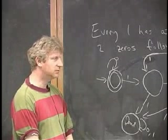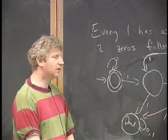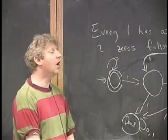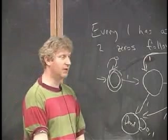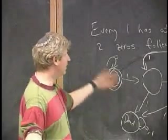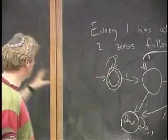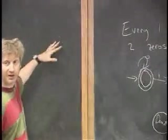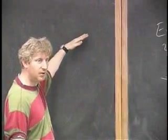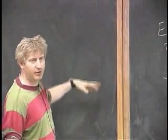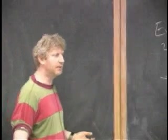Chomsky worked in the 50s to show that this was insufficient for human language, from a linguistic point of view. Actually, this bullseye I showed you the other day, finite state machines, and then context-free grammars, and then Turing machines, that more or less is called the Chomsky hierarchy, which he must have done in the mid-50s.